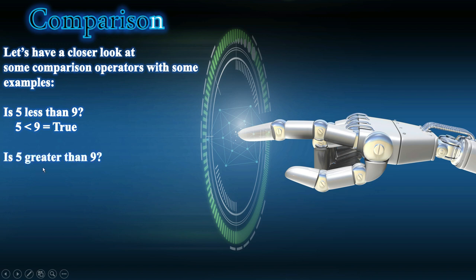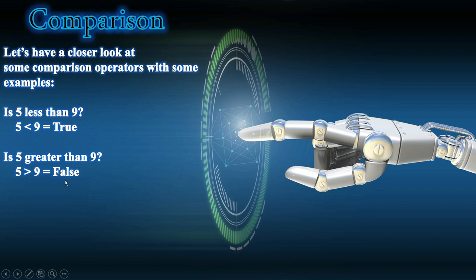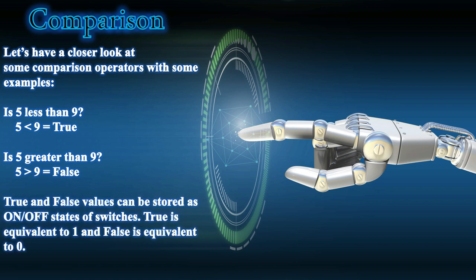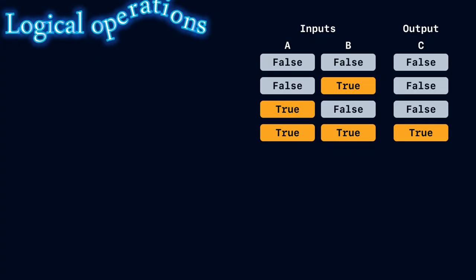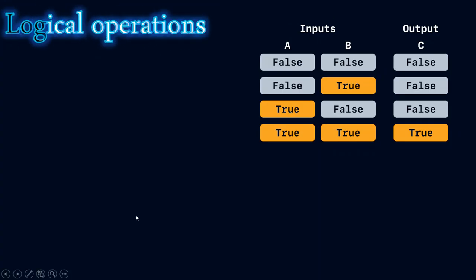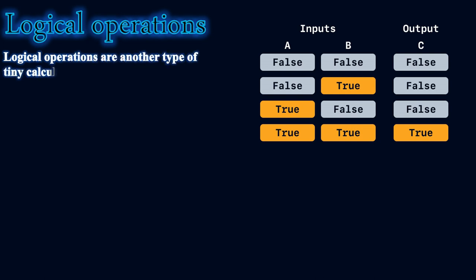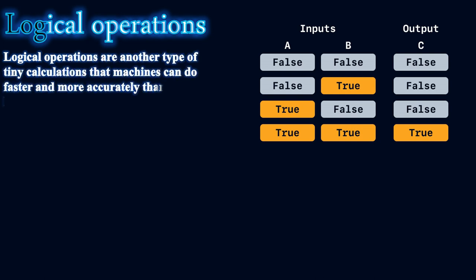Is 5 greater than 9? We write it as: 5 > 9, and this statement is false — so we write false, or 0 in binary. True and false values can be stored as on or off states of switches: true is equivalent to 1 and false is equivalent to 0.